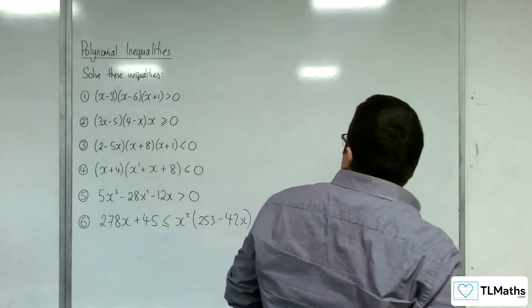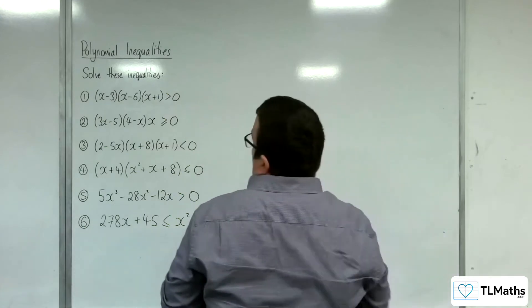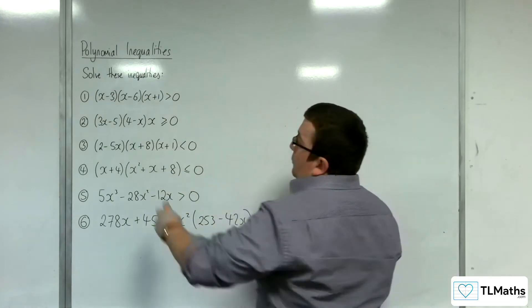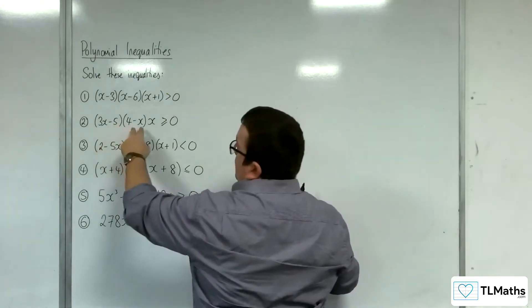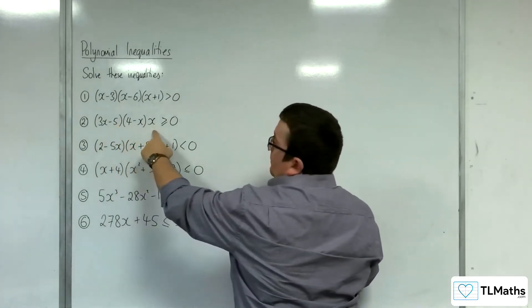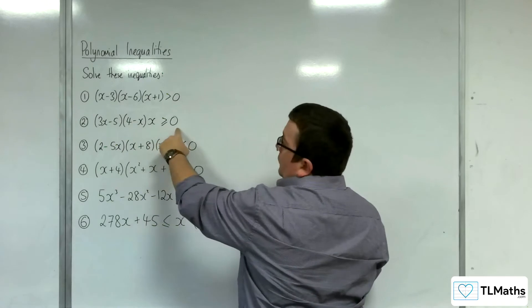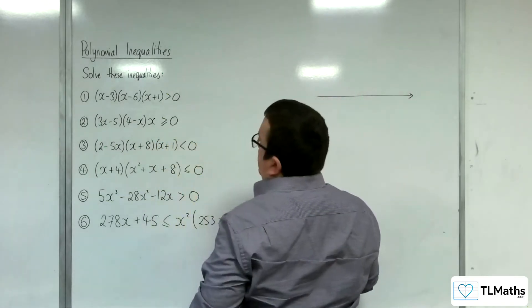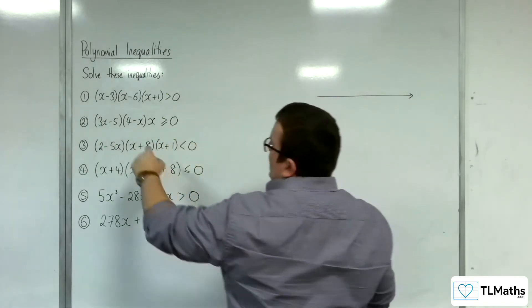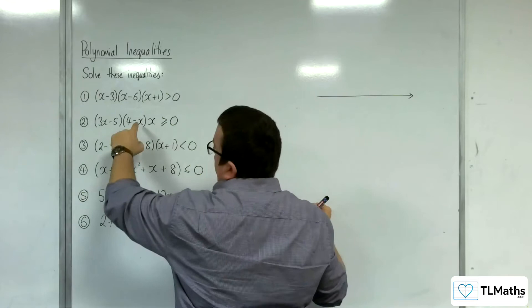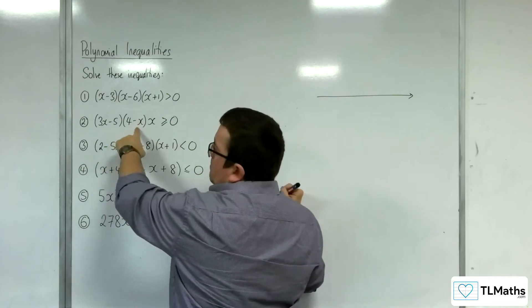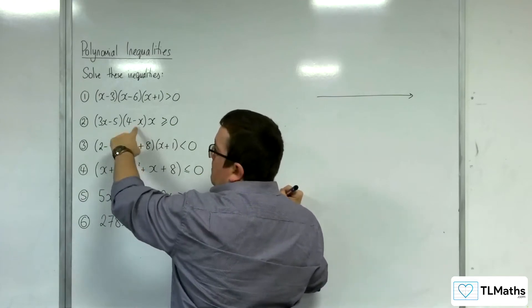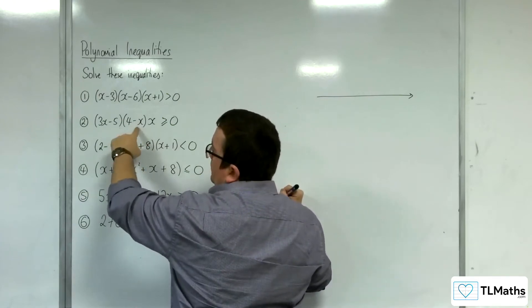Number 2: we've got (3x minus 5)(4 minus x)(x) greater than or equal to 0. Let's go straight in with the diagram. This is going to be a negative x cubed because when I multiply this out, I get a minus x cubed. So this is starting in the top left and working its way down to the bottom right.